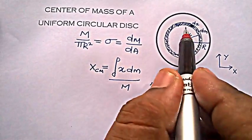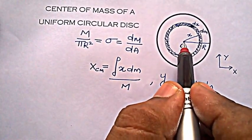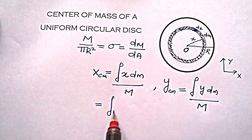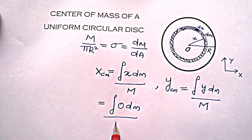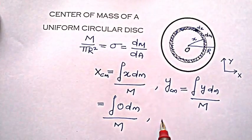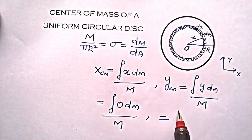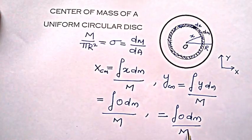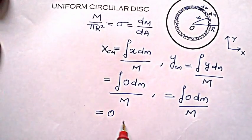Now if you take this strip, this strip is a circular strip and obviously center of mass lies at the center, so I can directly write as ∫0 dm / M, this is ∫0 dm / M.